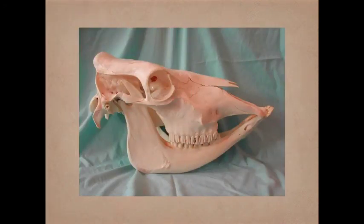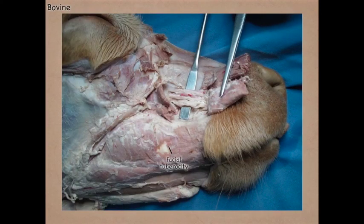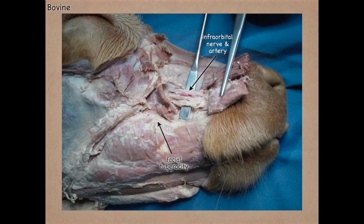Looking at the bovine skull, if we come up to the naso-incisive notch and drop ventral to that, rostral to the facial tuberosity, we'll find the infraorbital foramen. The facial tuberosity is very large, just as it is in the horse. However, in the bovine this nerve does not innervate the upper incisors and canine teeth because there are no upper incisors or canine teeth in the bovine.